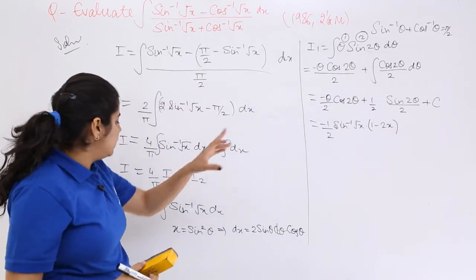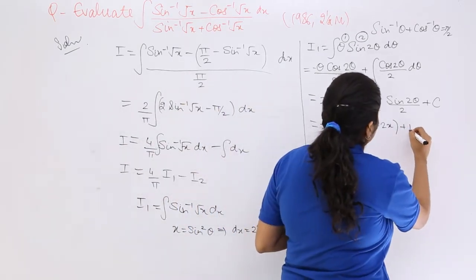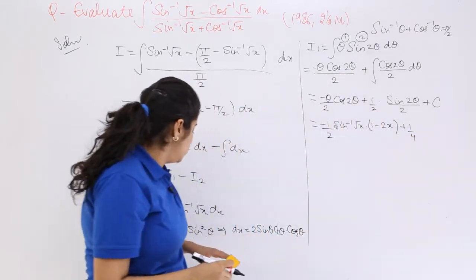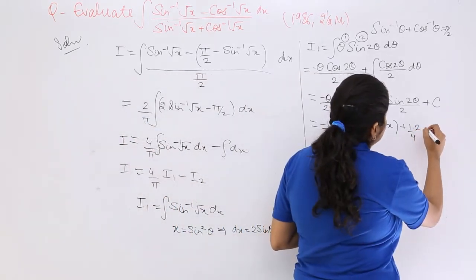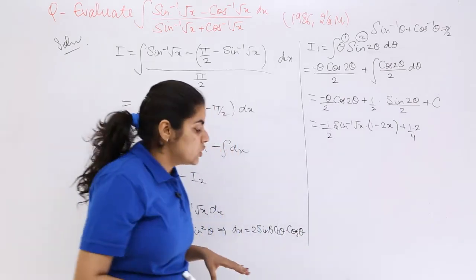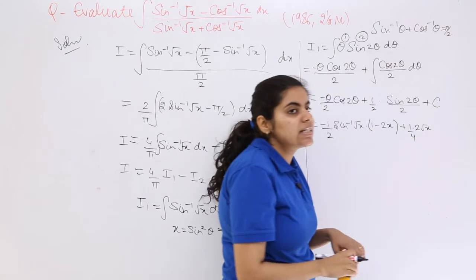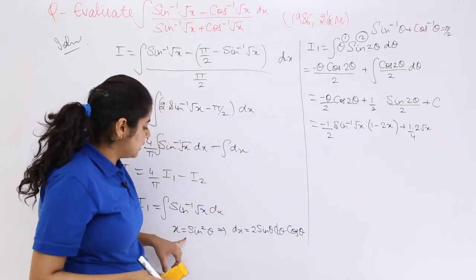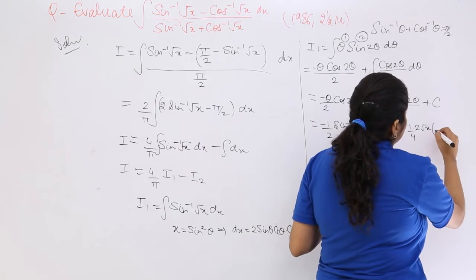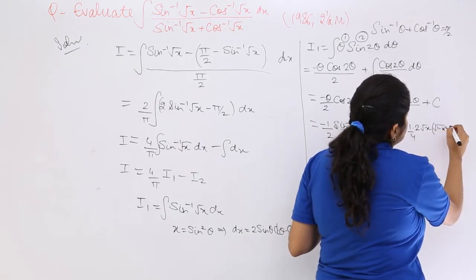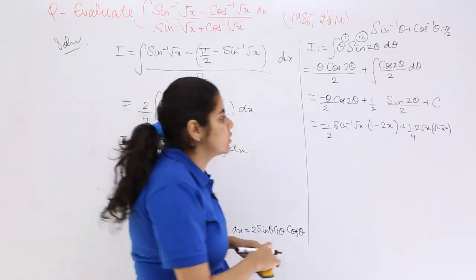Again I repeat: we had theta, so what is theta? You know that. And then it is plus 1/4 sin 2 theta. If this is sin 2 theta, it can be written as 2 sin theta cos theta. What is sin theta? It is root x. And what is cos theta? Cos theta is 1 minus sin squared theta, so under root 1 minus x. Plus constant of integration, plus c. 2 over 4 becomes 1/2.